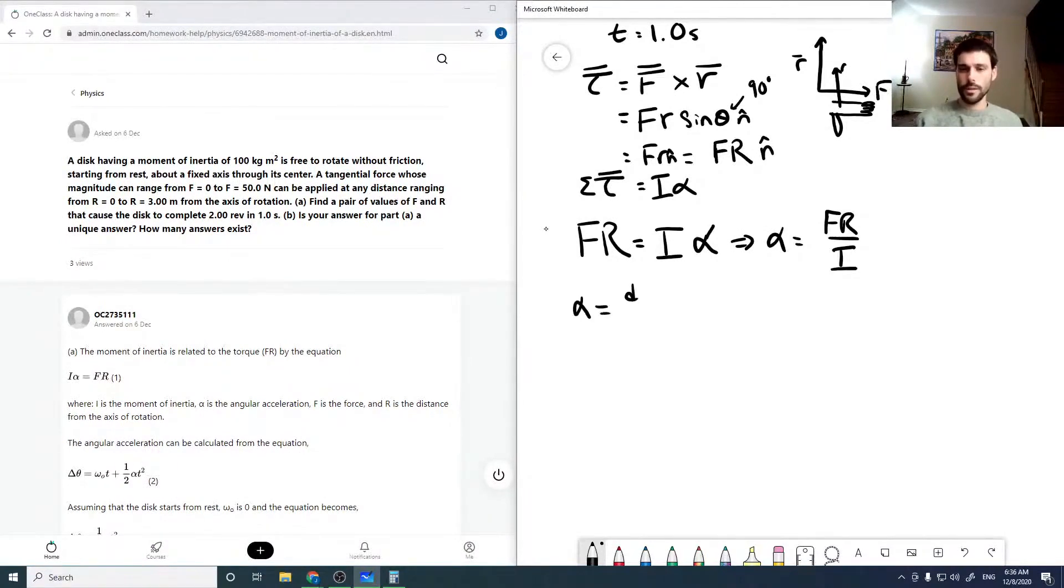Now alpha is D omega by DT, and so that means we can rearrange this to say that D omega is alpha DT. Or we can integrate both sides to get our omega. So integrating the omega side, we would have omega minus omega naught. And then the alpha side would be the integral of FR over I DT from zero to T. Assuming that we're starting from time zero and going into some time T.